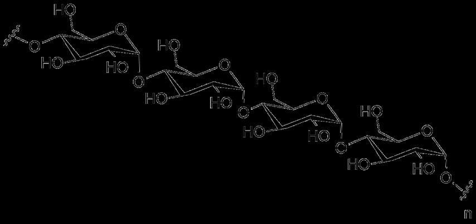In animals, the structurally similar glucose polymer is the more densely branched glycogen, sometimes called animal starch. Glycogen's properties allow it to be metabolized more quickly, which suits the active lives of moving animals.